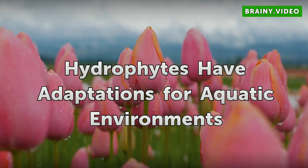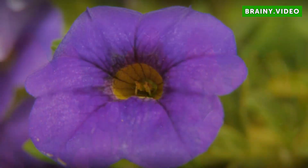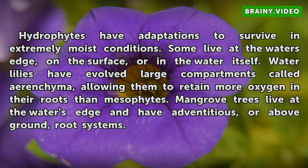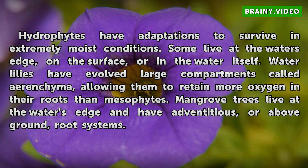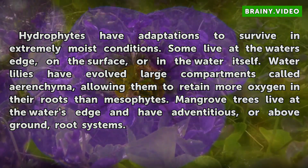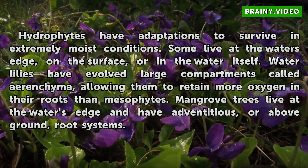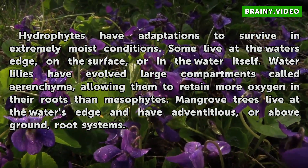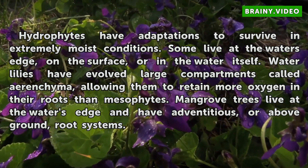Hydrophytes have adaptations to survive in extremely moist conditions. Some live at the water's edge, on the surface, or in the water itself. Water lilies have evolved large compartments called arenchyma, allowing them to retain more oxygen in their roots than messophytes. Mangrove trees live at the water's edge and have adventitious, or above-ground, root systems.